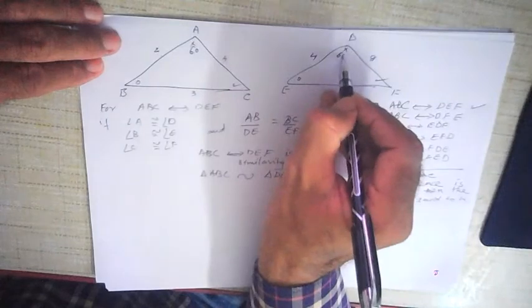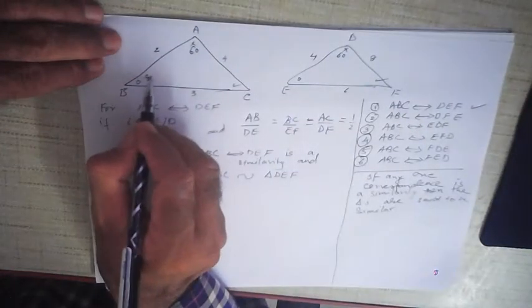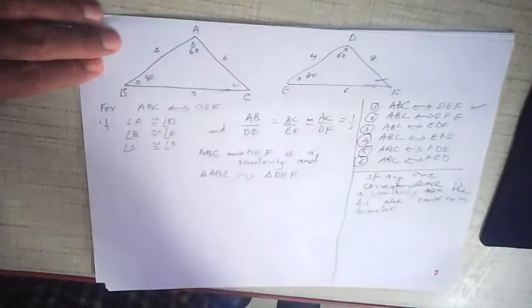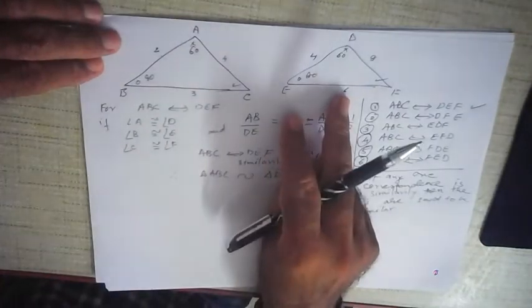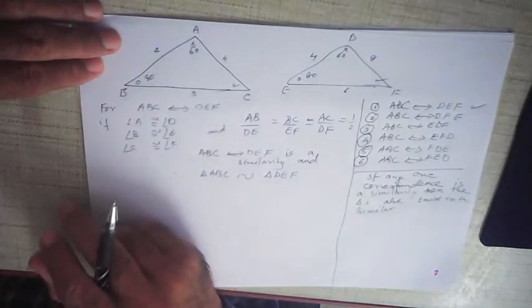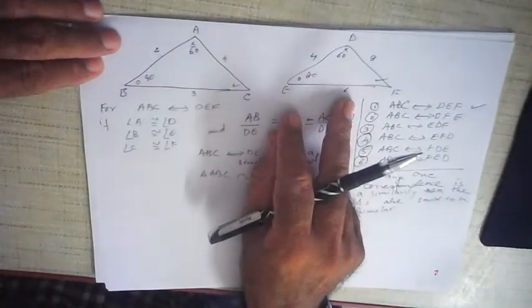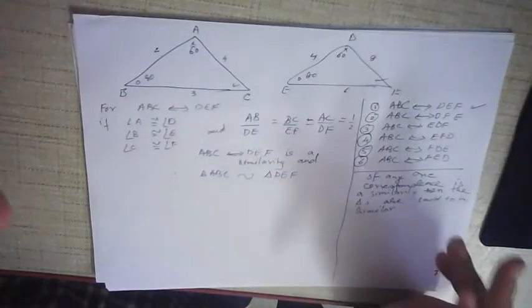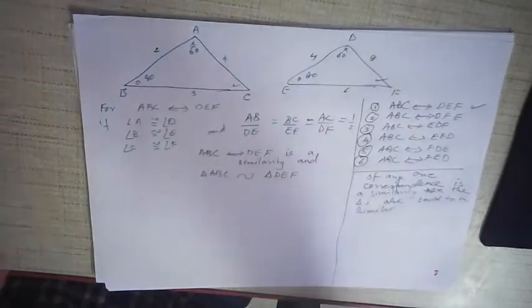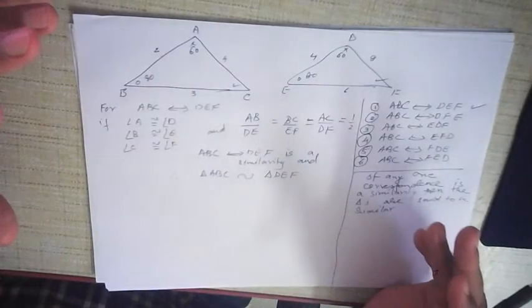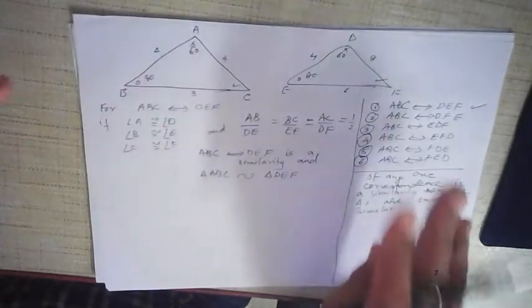If two angles are equal — say this is 60 degrees and this is also 60 degrees, and this is 80 degrees, then this is 80 degrees — so two angles are equal, the third angle will automatically be equal because the sum of three angles is 180 degrees. In reality, all we have to do is check two angles. If for a given correspondence two angles are congruent, the third angle is automatically congruent, and therefore the triangles are similar.